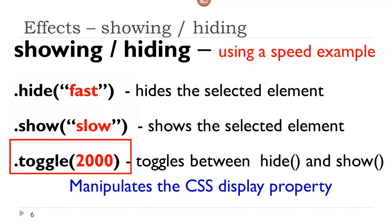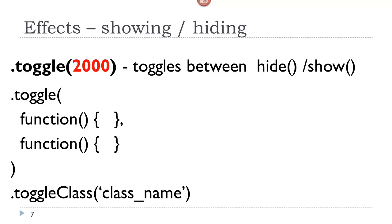The toggle method toggles between these two effects, hide and show. So the first time you click, you would hide it. The second time you click, you would show it. I would like to point out that there are two other methods in jQuery that have the word toggle in them. So the first method here, the toggle effect method, which toggles between the hide and show effects, will always take some kind of a time duration and an easing factor.